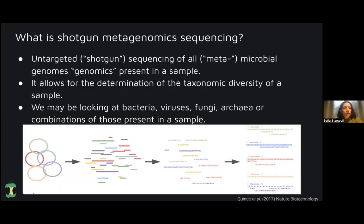So to start with, what is shotgun metagenomics sequencing? I borrow the description from Kin's paper from 2017, that describes shotgun metagenomic sequencing as the untargeted sequencing of all microbial genomes present in a sample. It allows for the determination of the taxonomic diversity in a sample, and we may be looking at bacteria, viruses, fungi, archaea, or a combination of those that are present in a sample.